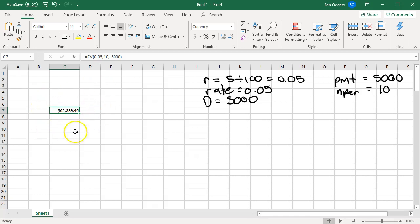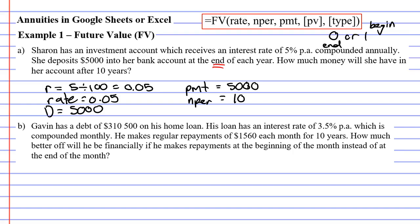And then we got a positive amount for our future value, which is what we wanted. So let's write this down as our solution for question A. $62,889.46 is how much money Sharon will have in her investment account after 10 years. Alright, let's now move on to question B.